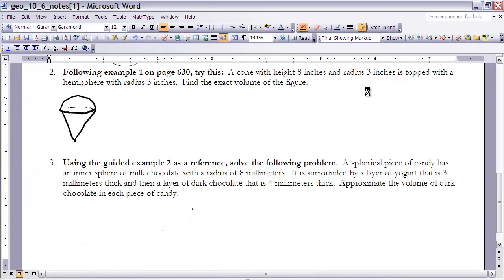Let's take a look at number 2. It says, following example, it's very similar to example 1 on page 630. So you might want to read that first before going on. It says a cone with a height of 8 inches and a radius of 3 inches is topped with a hemisphere with a radius of 3 inches. Find the exact volume of the figure.